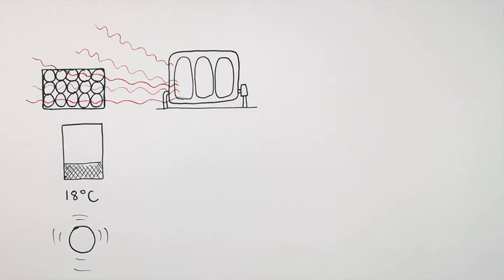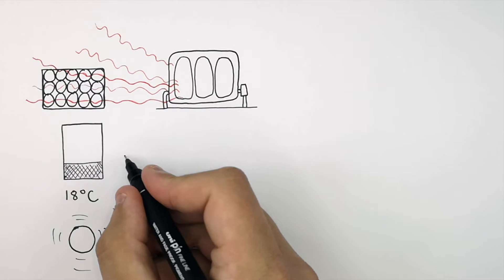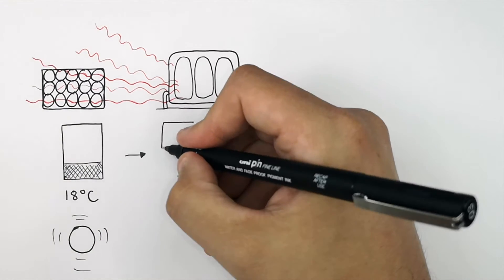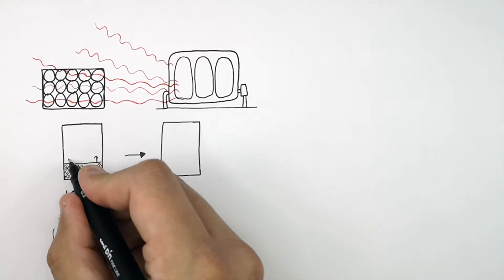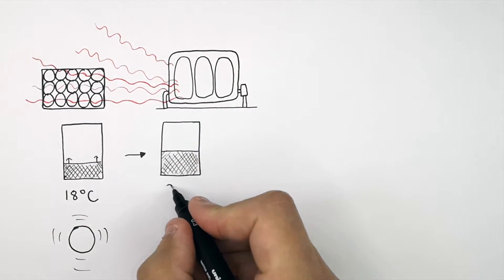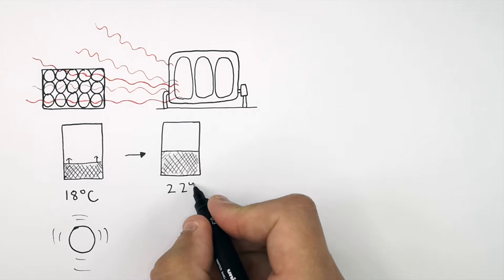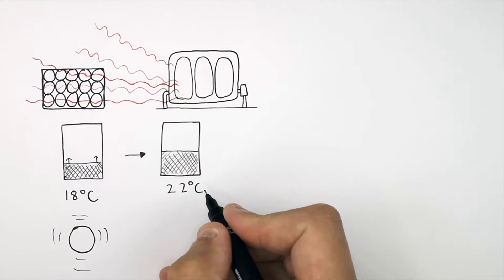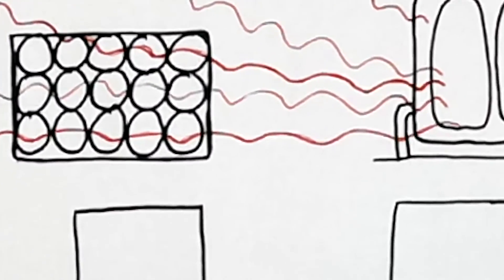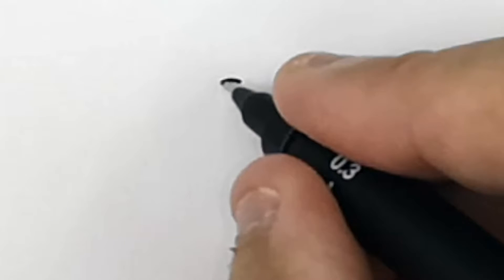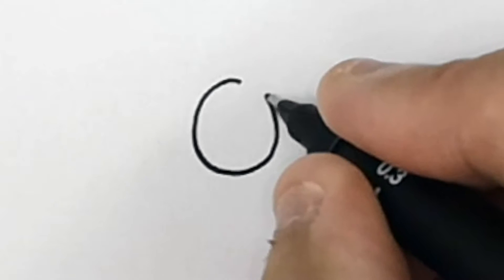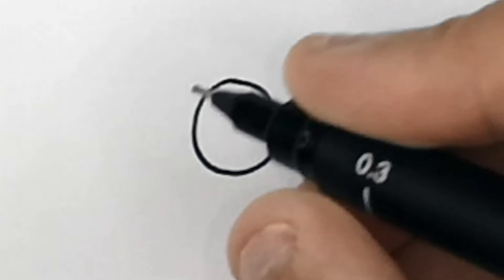So after some time, the object's temperature is going to increase from 18 degrees Celsius to 22 degrees Celsius. This means there is more energy in the object's thermal energy store. At 22 degrees Celsius, the object has a higher temperature, which means there is more energy in its thermal energy store.